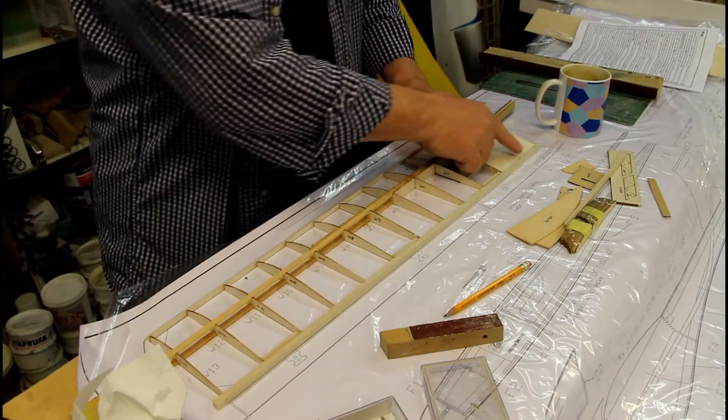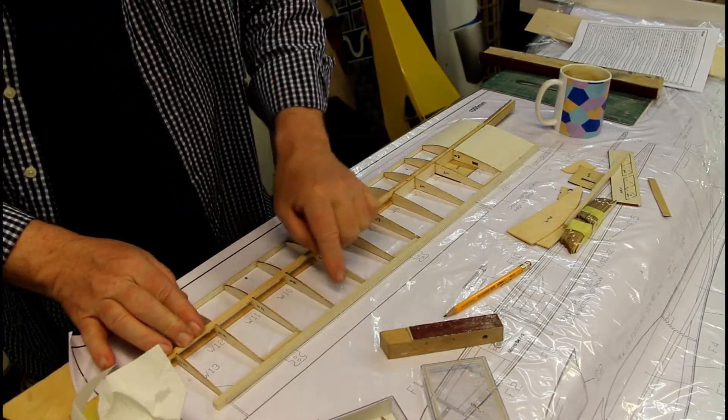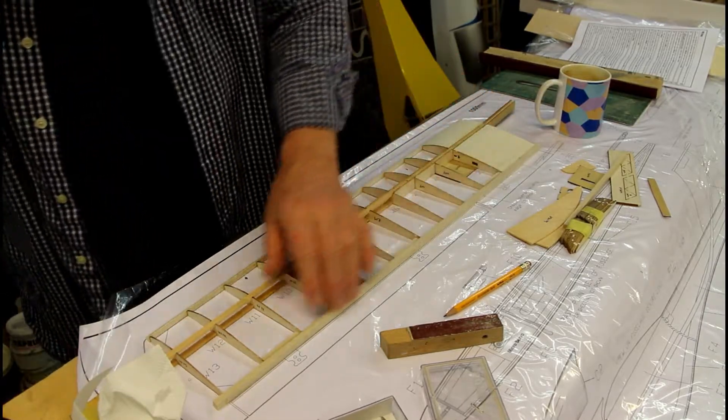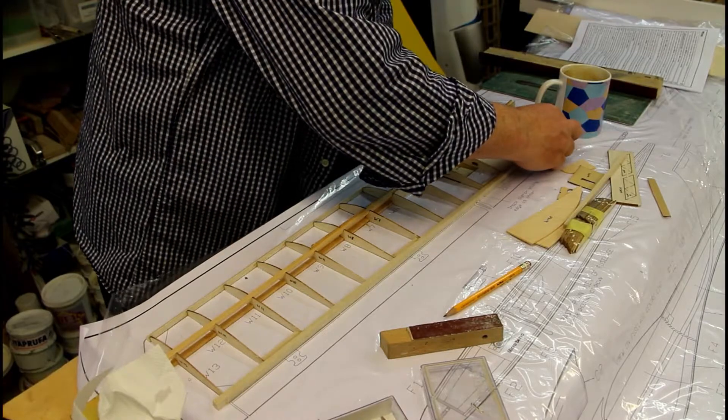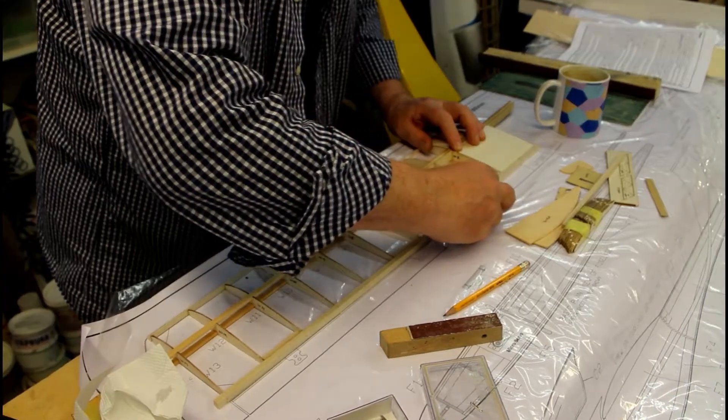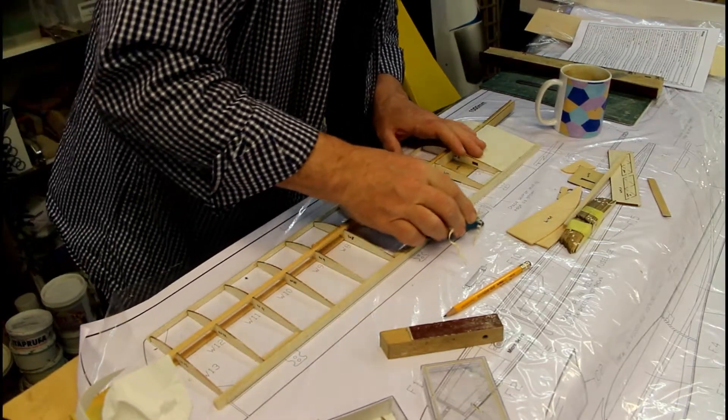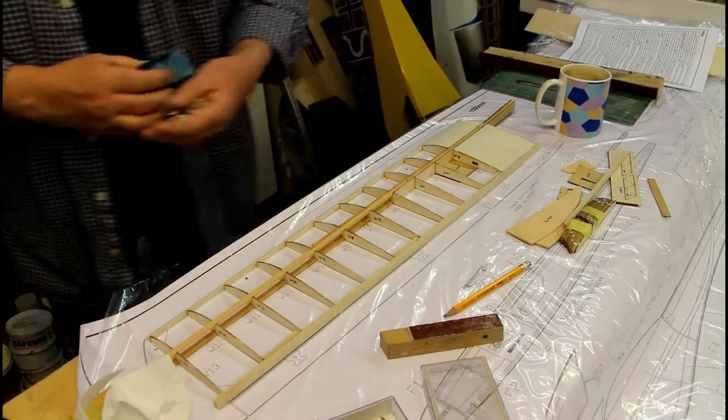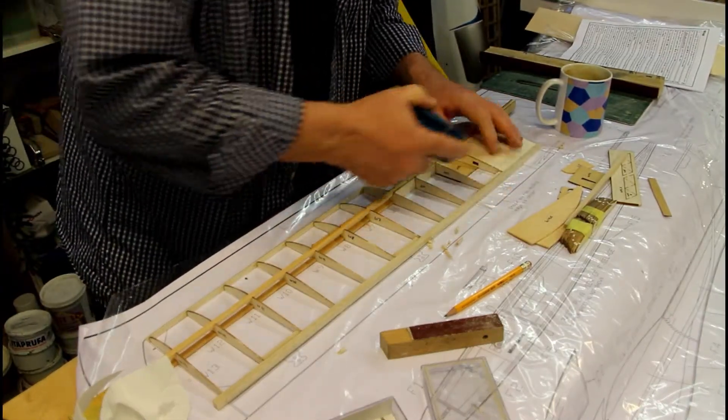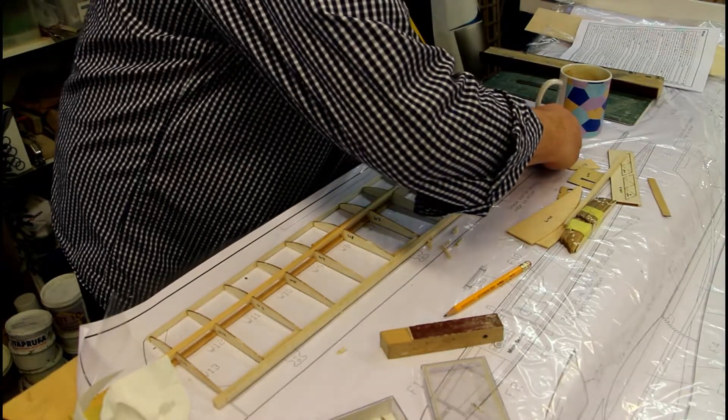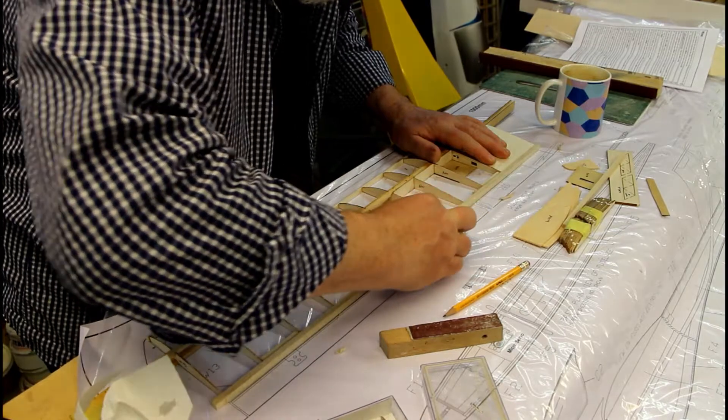The first thing I want to do is take the trailing edge down. It's a little high. You can feel the steps here from the ribs and I want to clean these down using a balsa plane like this. This will take a few strokes. The trailing edge is a little hard and it really doesn't plane that nicely.